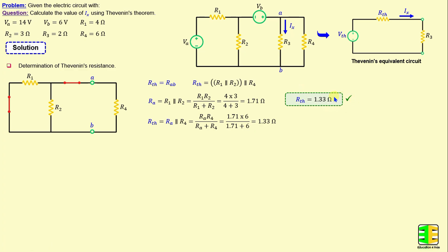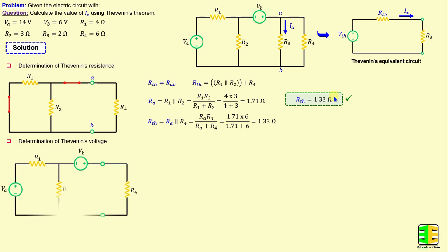Rth is equal to 1.33 ohms. After finishing the determination of the Thevenin resistance, we proceed to calculate the Thevenin voltage. The Thevenin voltage is basically the open circuit voltage between terminals A and B when R3 is disconnected.